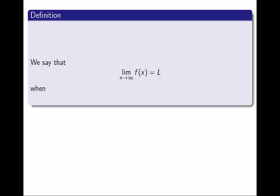To summarize, we say that the limit as x approaches infinity of f equals L when, for every positive real number ε, there exists a real number M, such that if x is greater than M, then the distance from f to L is less than ε.